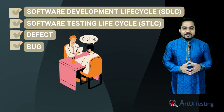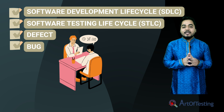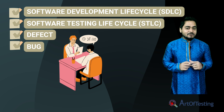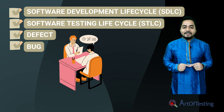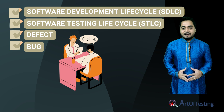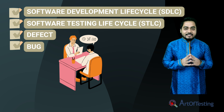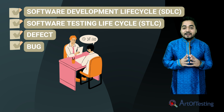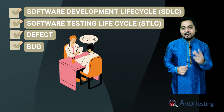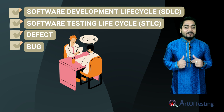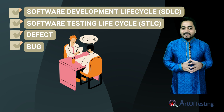When you explain this difference in an interview, you not only tell the interviewer that you are fully aware of the differences between bug and defect, but you also demonstrate that you are fully aware of what SDLC and STLC are and their various phases. So from one question, you are telling the interviewer that you are well-versed with both SDLC and STLC.